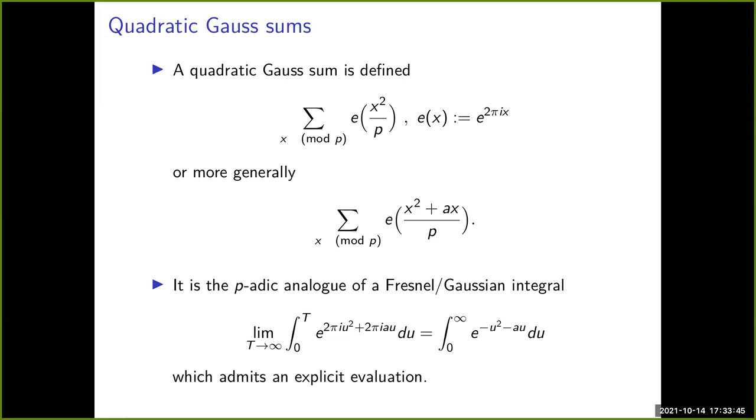Thank you for the invitation. I want to talk about the bias in cubic Gauss sums. Let me start with quadratic Gauss sums — I say awkwardly because I think everybody here is actually very familiar with quadratic Gauss sums, but let me do it nonetheless.